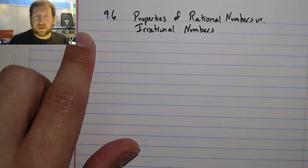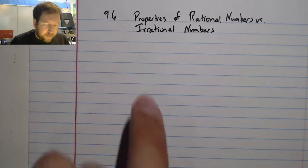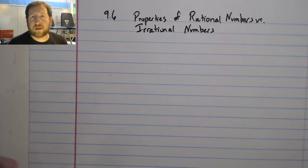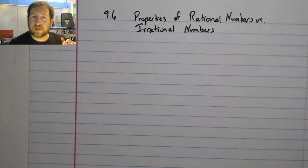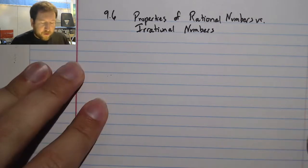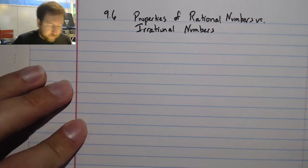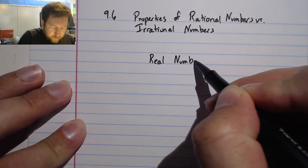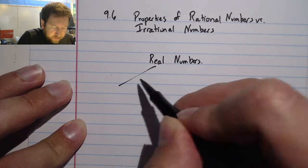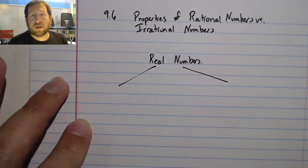Alright, I want to talk about section 9.6, called Properties of Rational Numbers versus Irrational Numbers. We're going to sort them and talk about the two different styles of numbers. First, both of these numbers come from the real number system, but within the real numbers we have two large sections.